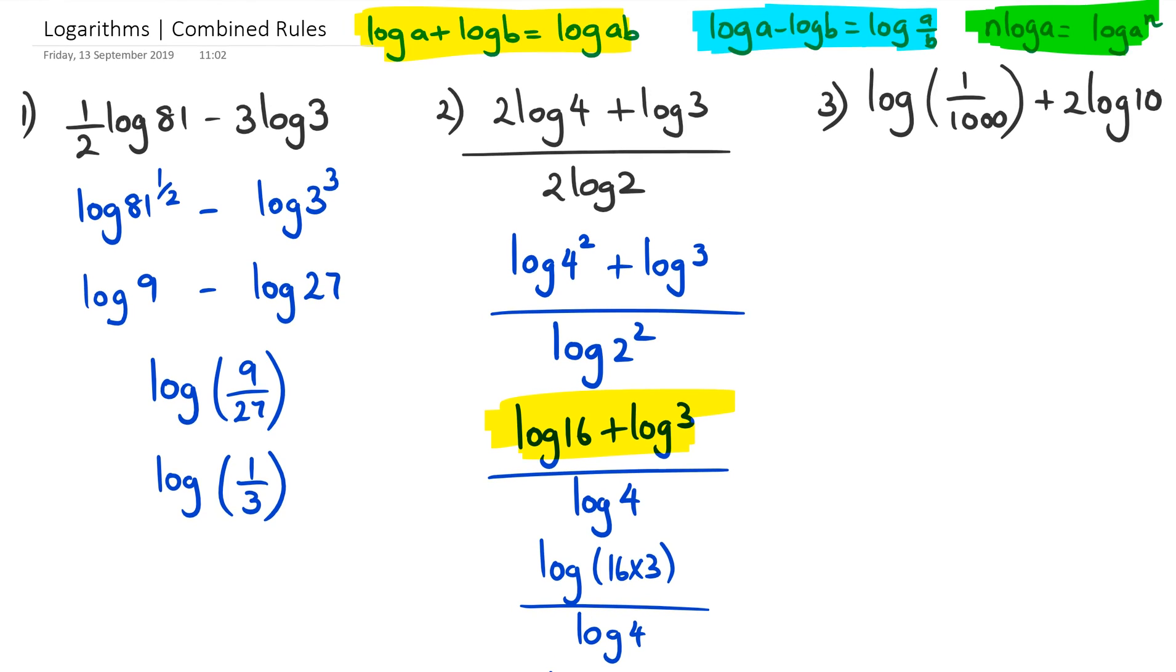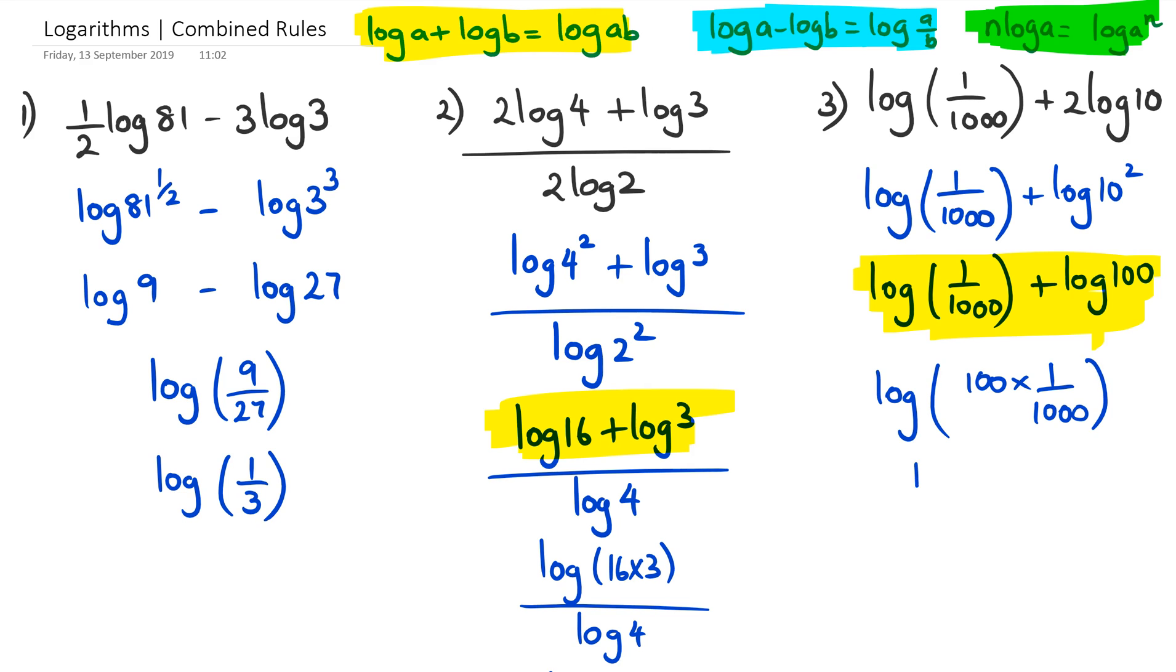Let's go to question number three. What we have is log(1/1000)—we're just going to leave it as it is—plus log10². Now, log10² can be written as log100. Because we're adding two logs, we've got to multiply the two numbers. So we end up with log(100 × 1/1000), which equals log(1/10).